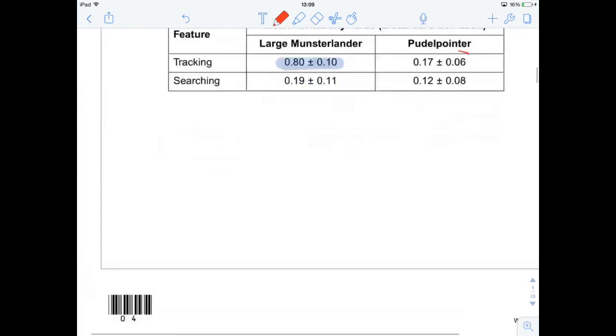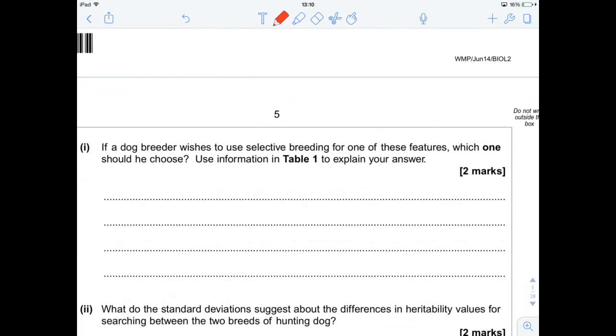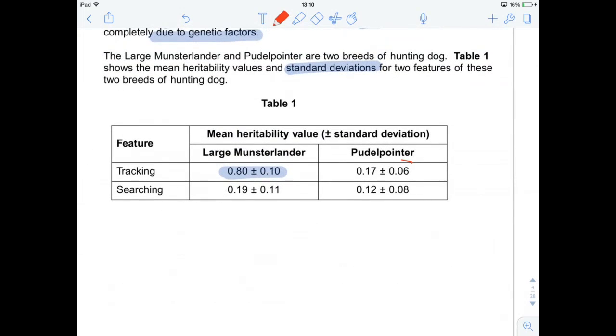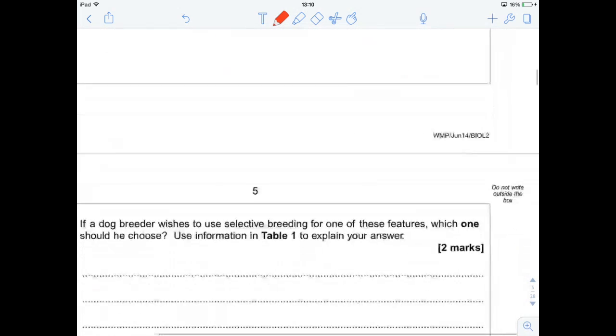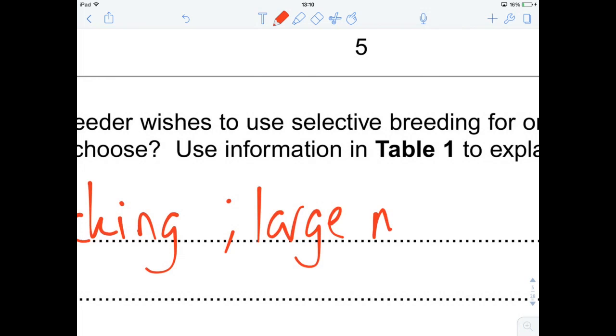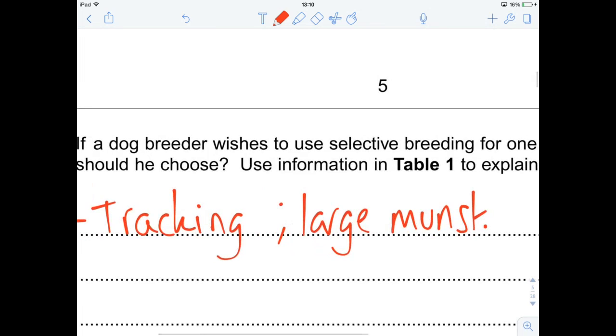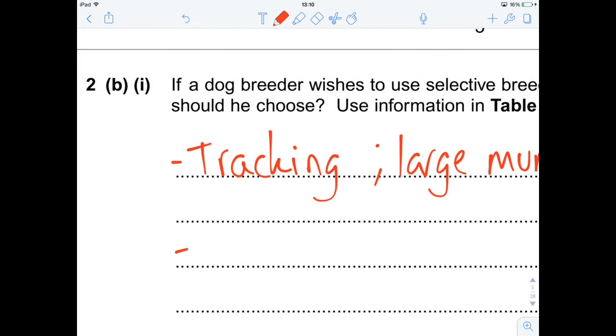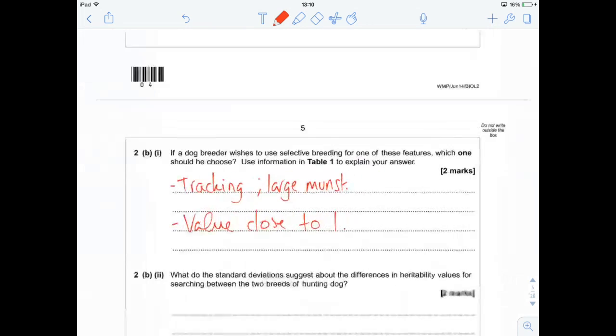If a dog breeder wishes to use selective breeding for one of these features, which one should he choose? So we want the one that's almost entirely due to genetics. So he would use the large munsterlander for tracking. So he'd use tracking for the large, I'll just put munched. The reason why? It's almost entirely controlled by genetics. So value is close to one. Very good. Not too bad. Two marks.